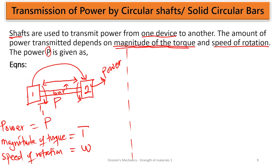So what is going to be the relation between torque and power? The power transmitted by the circular shaft is going to be the torque multiplied by the speed of rotation. This is the expression — Equation 1: P = T·ω.